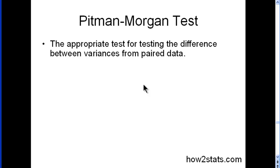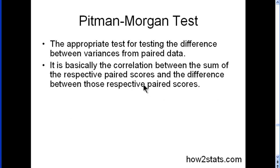Everything shown thus far is more for cases like T-Test and ANOVA — that means between-groups variances. But what if you have paired data, like in the paired samples T-Test? How do you test variances in those cases? You use the Pittman-Morgan test. It is basically the correlation between the sum of the respective paired scores and the difference between those respective paired scores.